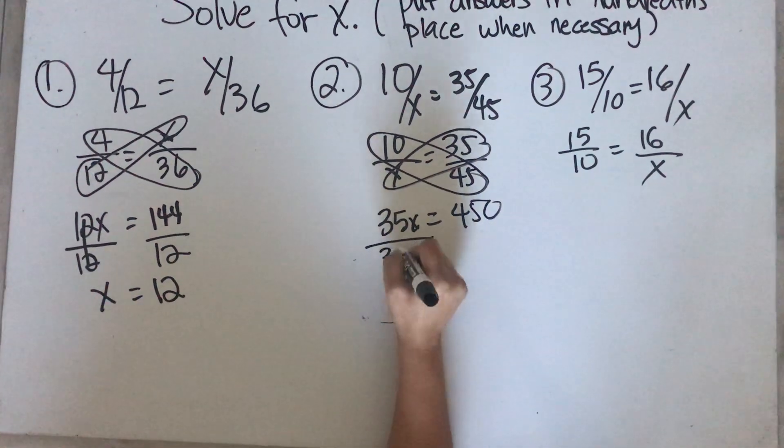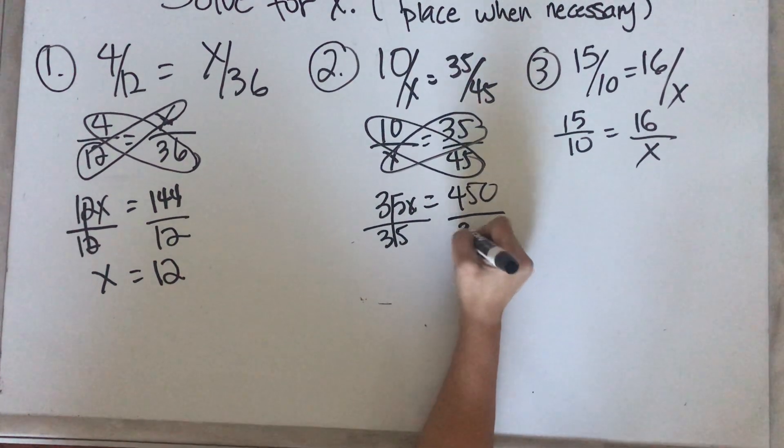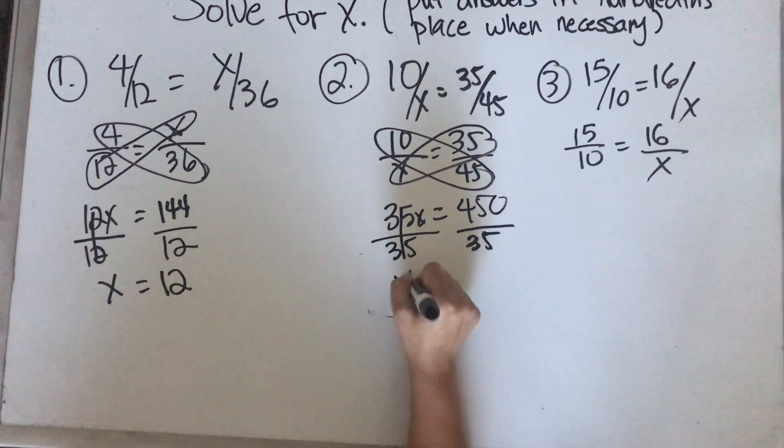And then 45 times 10 is 450. And to get x by itself, you have to divide it by that number next to the x. If you do it in this side, you have to do it on this side. So this is x.